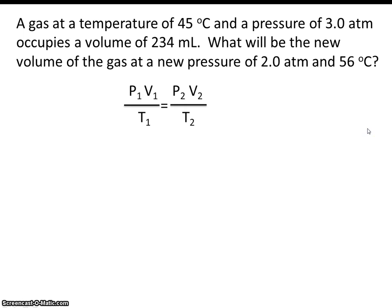So let's use the combined gas law and plug in what we know, both initial conditions and final. We know we have a pressure of 3 atmospheres and a volume of 234 milliliters. So there's our pressure and there's our volume.